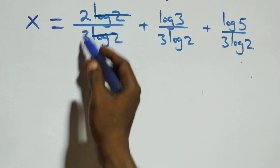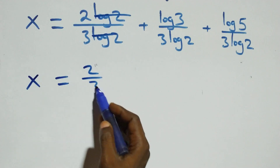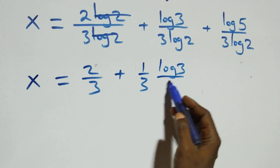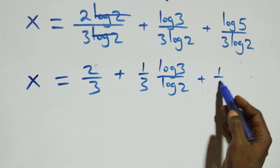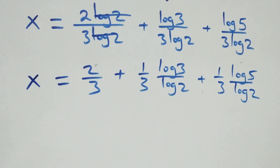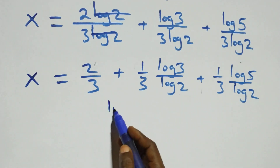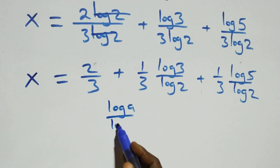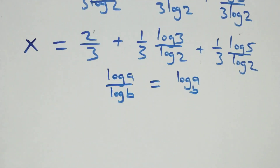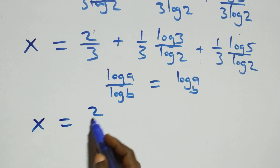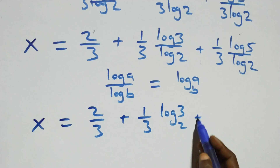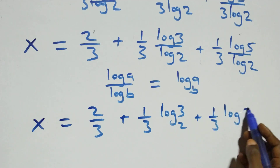The log 2 terms cancel each other, giving 2 over 3. So x equals 2 over 3 plus 1 over 3 times log 3 over log 2 plus 1 over 3 times log 5 over log 2. Applying the change of base rule — log A over log B equals log A to base B — this becomes x equals 2 over 3 plus 1 over 3 log₂3 plus 1 over 3 log₂5.